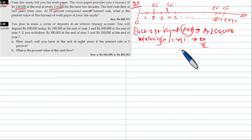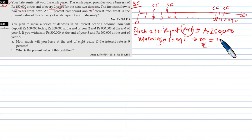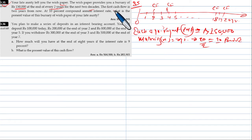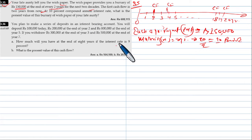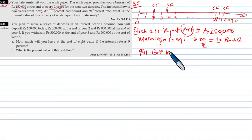We have 20 divided by 2, giving us the number of periods. The first cash flow is two years from now. The interest rate is 10% compound annual interest, so i is equal to 10 percent.